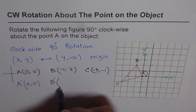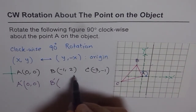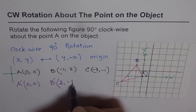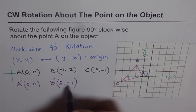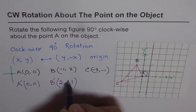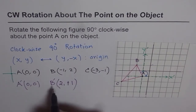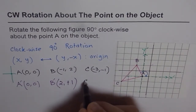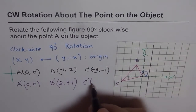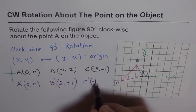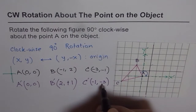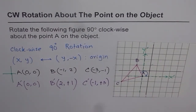We then change the sign of y, so B' = (2, +1). For C', we swap −1 and −3 to get (−1, −3), then change the sign of y to get C' = (−1, +3). That is the final transformed point.